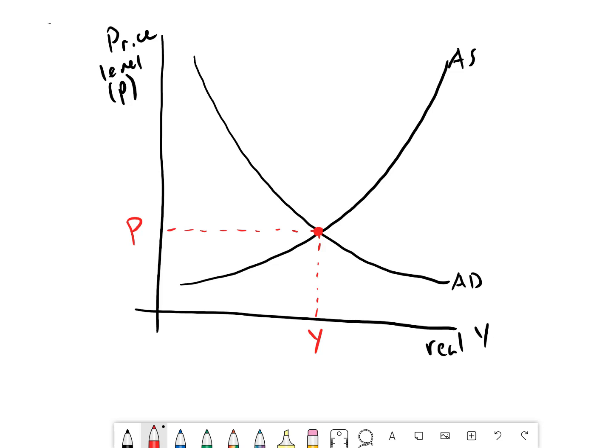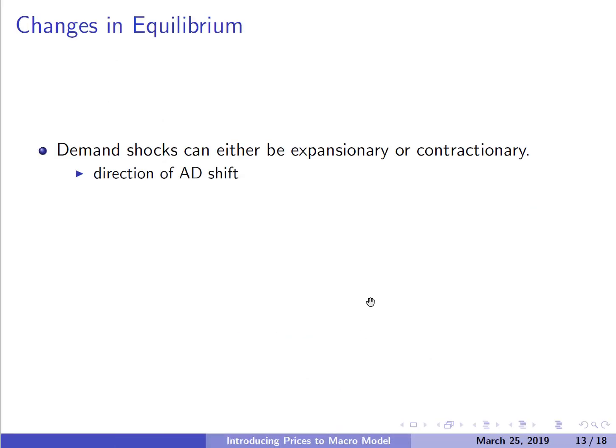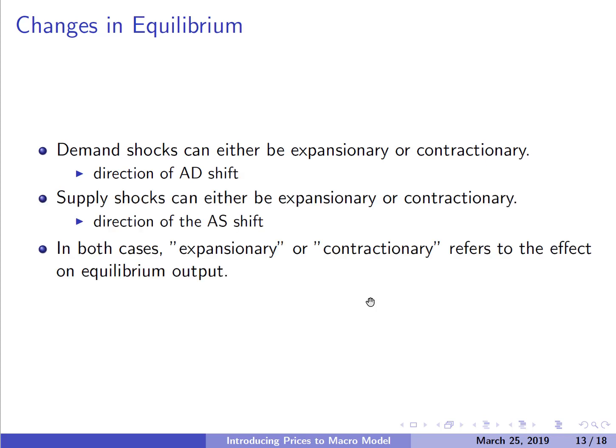Now that we've discussed equilibrium, we can think about changes to it. Demand shocks involve the AD curve shifting right (expansionary, increasing real Y) or left (contractionary, decreasing real Y). Supply shocks work the same way — expansionary supply shocks shift the AS curve to the right, such as a technology improvement or a decrease in input prices. Contractionary supply shocks shift the AS curve to the left, for example when the price of oil goes up.